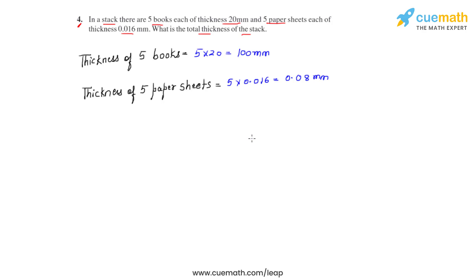Now that we have found out the thickness of the five books and the five paper sheets, we can find the total thickness of the stack which is made out of the five books and the five paper sheets. So we will have to add their thicknesses. We add 100 plus 0.08 millimeters so we get it as 100.08 millimeters.